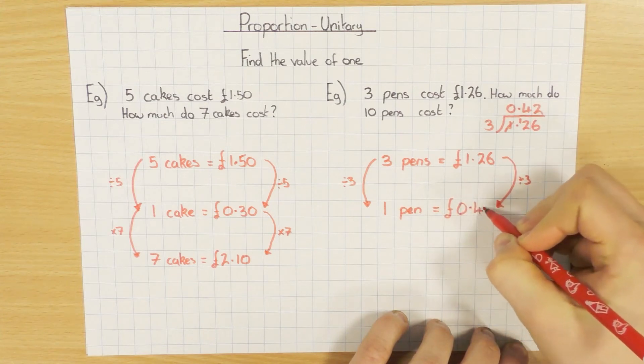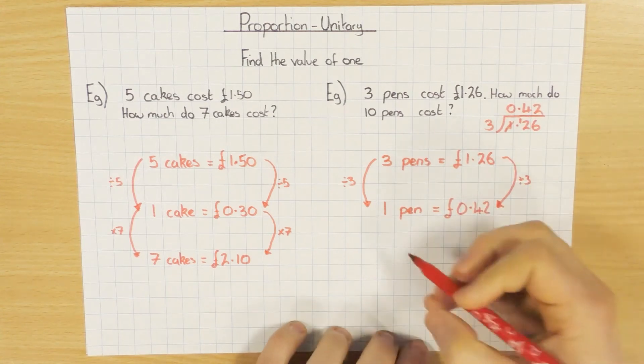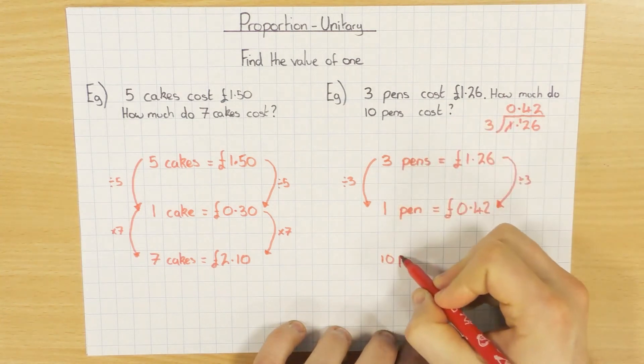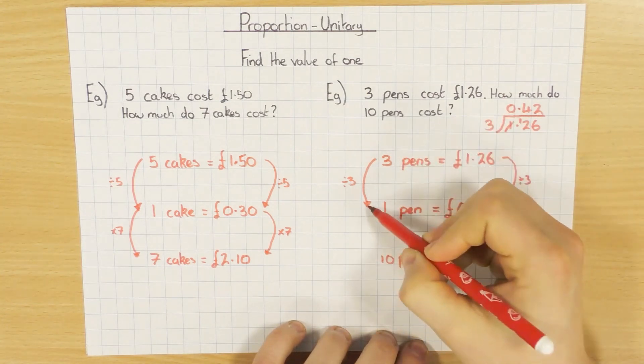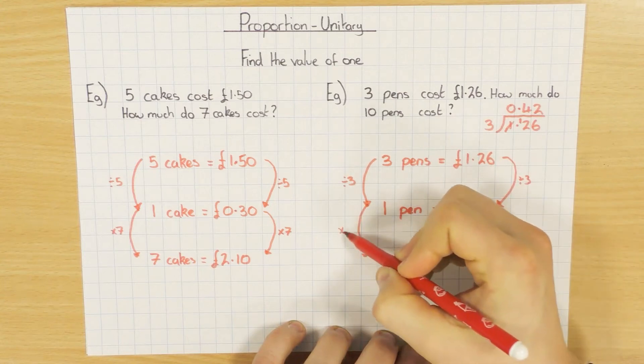So we have 42p is the cost of 1 pen. And we want to know the cost of 10 pens. So to go from 1 to 10, we times by 10.